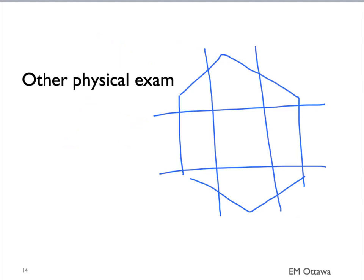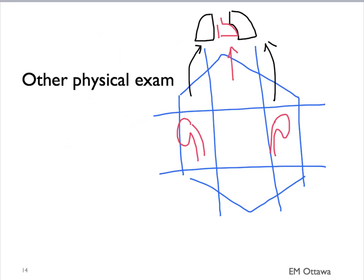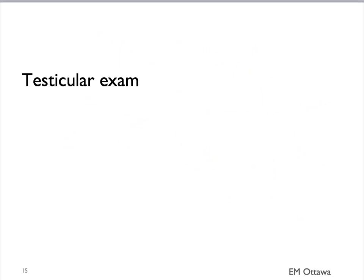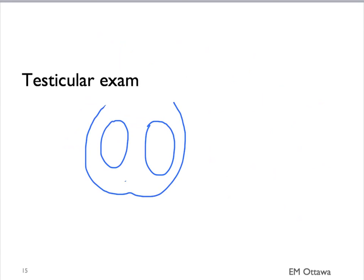Patients with right or left upper quadrant pain might need a respiratory exam. Those with epigastric pain might need a cardiac exam. Those with flank pain might need a kidney-specific exam. For those with right or left lower quadrant pain, we need to add a testicular exam or a pelvic exam. In the testicular exam, we're looking for swelling, tenderness, any sign of torsion, and presence of hernia.